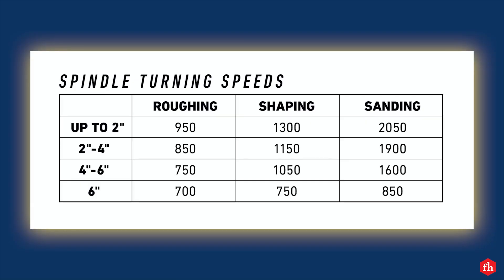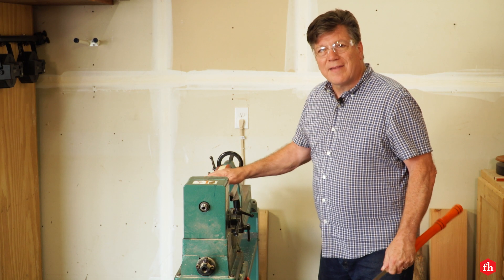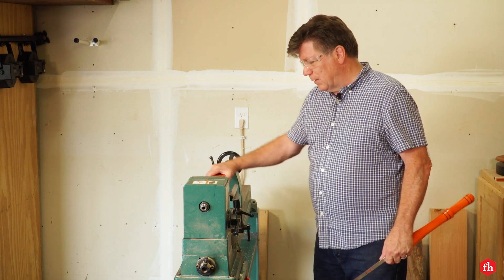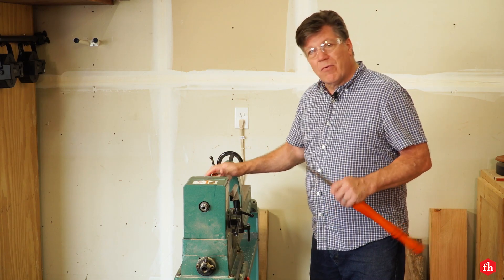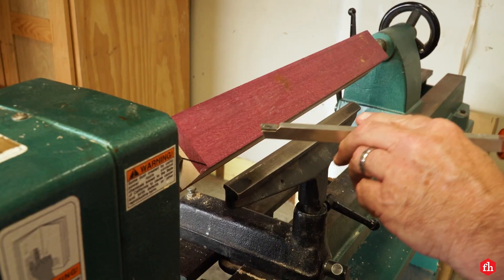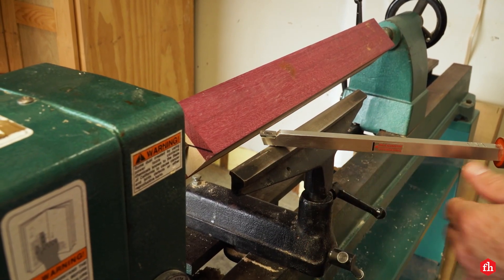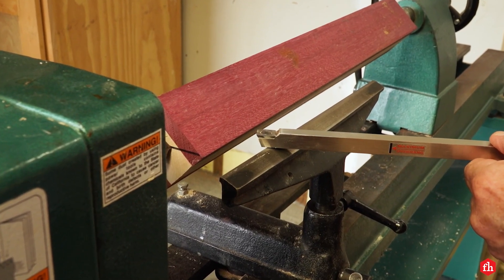There are different turning speeds for roughing, shaping, and sanding. Refer to this chart here. All right, time to start roughing this piece out. I'm going to turn this square piece of wood into a round cylinder. One thing to remember, always make direct contact with your tool on your tool rest before it makes contact with the turning blank.